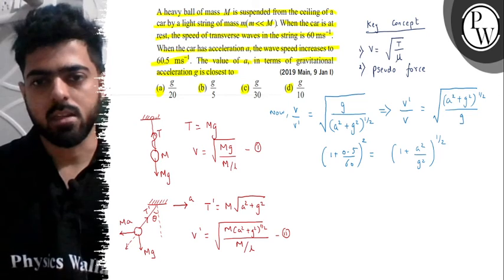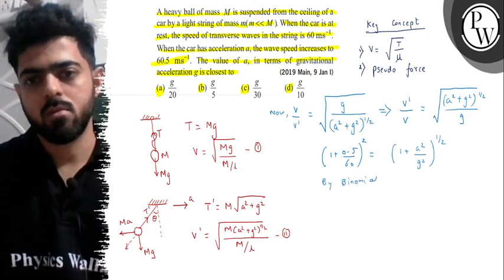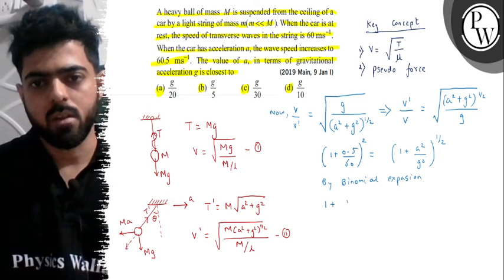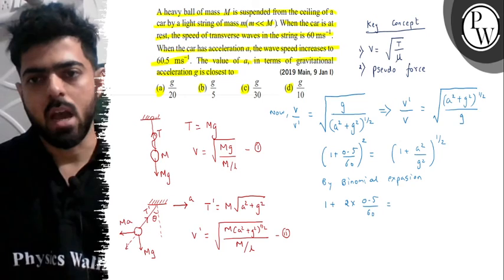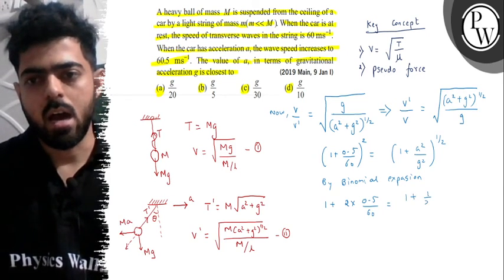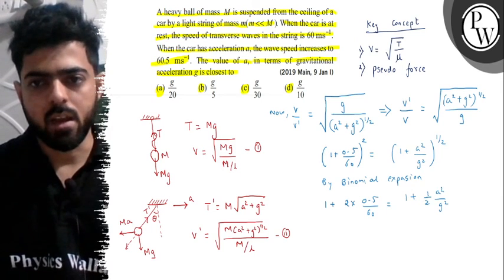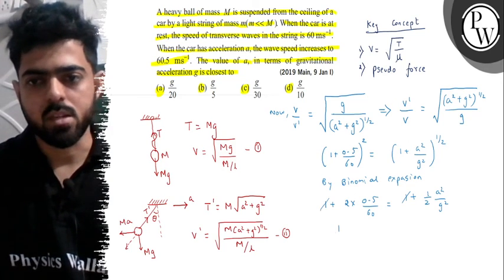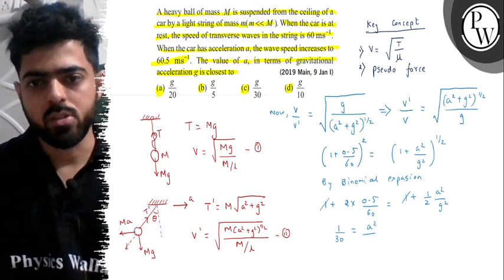Now using binomial expansion, we will expand. So what expression we will get? 1 plus 2 into 0.5 divided by 60. We will expand, so we can say that 1 and 1 will get cancelled from here. This is 1 plus 1 by 2 into a-square by g-square. We will expand, and if the 1 and 1 will get cancelled out from here, what's left is 1 by 2 into a-square by g-square.